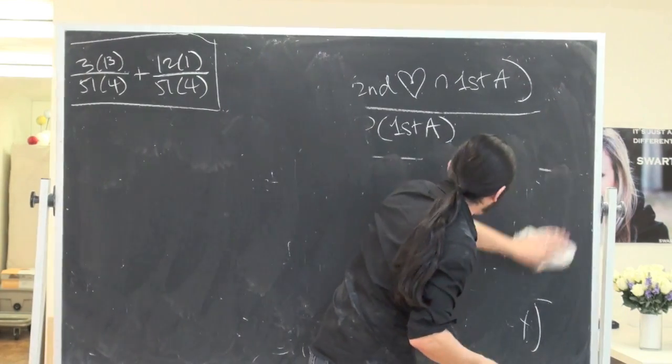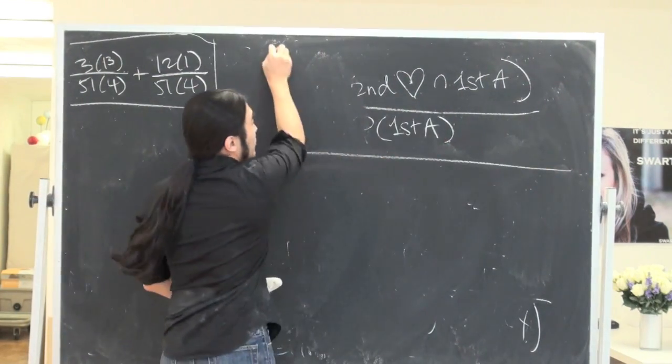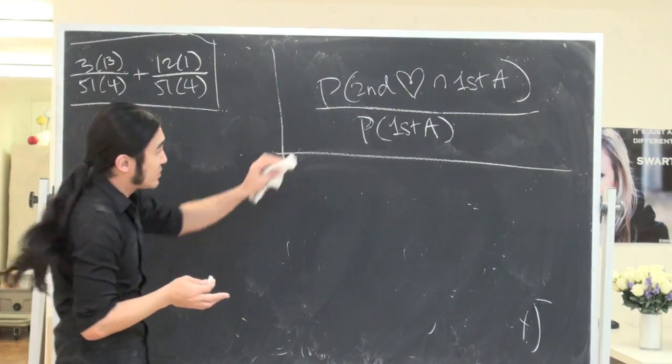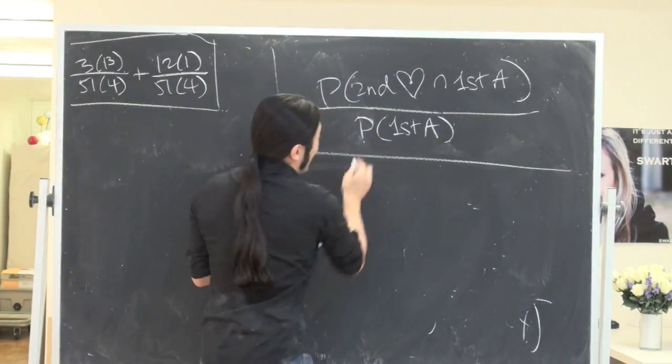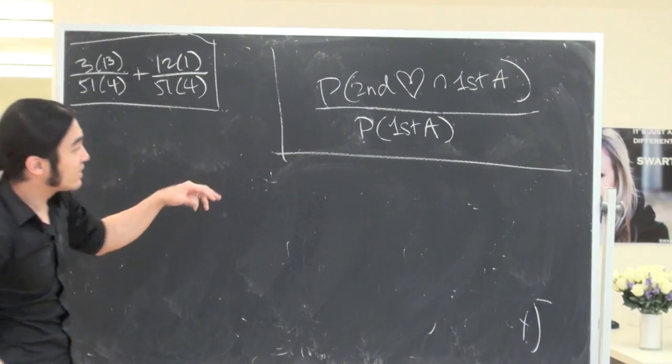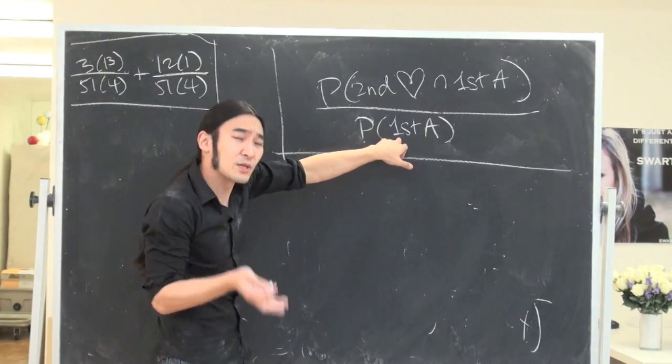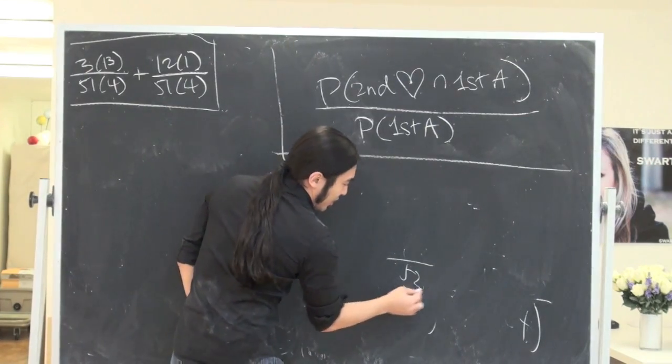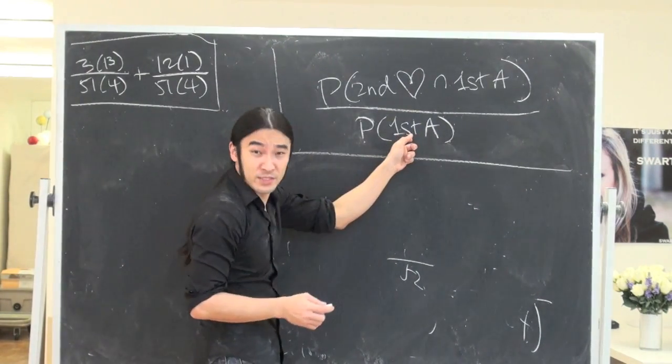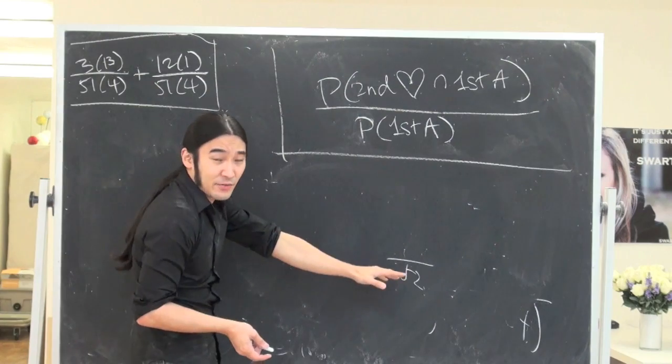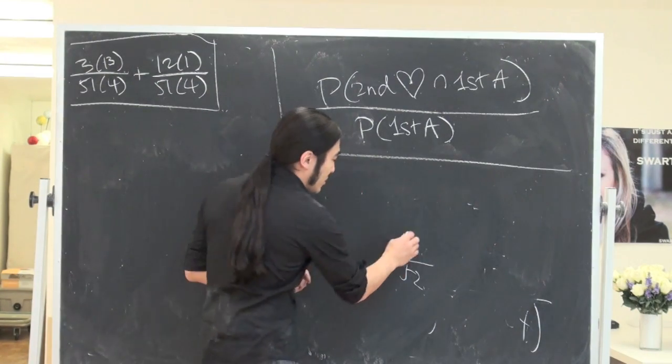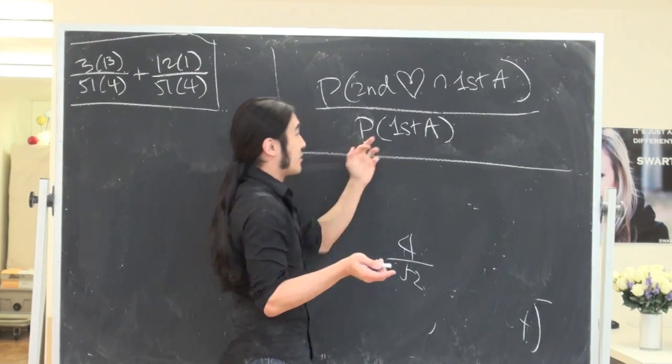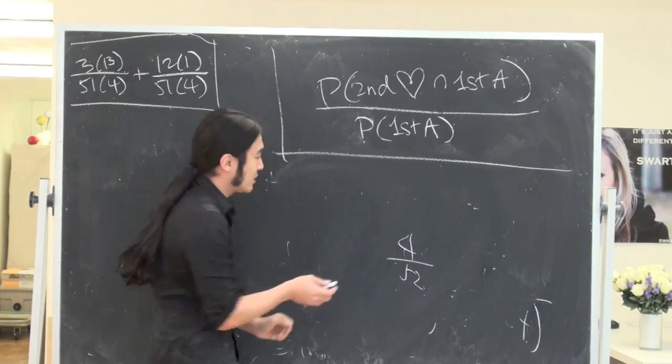For those of you who don't like that and prefer the traditional method, we can do that too. Let's do the traditional method. Always go for the easy part first. What's the probability the first card is an ace? Out of the 52 cards, you're going to pull one to be an ace. How many aces are there? There are 4. For the second card, you can pick whatever. It doesn't matter.